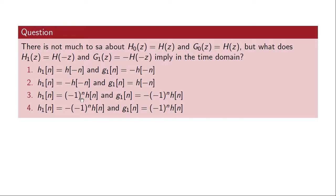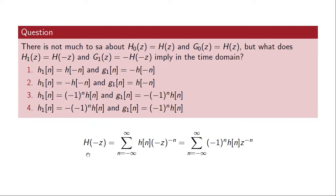The way to see the sign flip for every second tap is to write out the Z-transform for H of minus Z. You replace Z in the Z-transform with minus Z, and then you can pull out the minus one from the expression and place it in front of the filter taps, which leads to the sign reversal of every second tap.